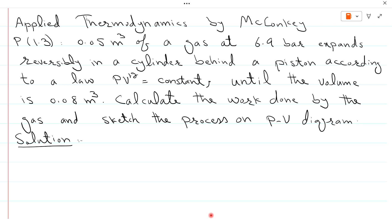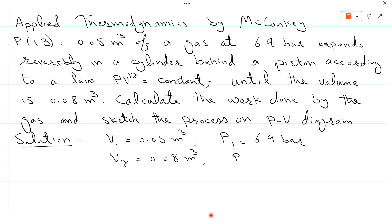Problem 1.3: 0.05 cubic meters of a gas, so V1 is equal to 0.05 cubic meters at P1 equal to 6.9 bar. The gas expands reversibly in a cylinder behind a piston according to the law PV^1.2 equal to constant. In expansion, volume is increasing and pressure is decreasing, until the volume reaches V2 equal to 0.08 cubic meters.